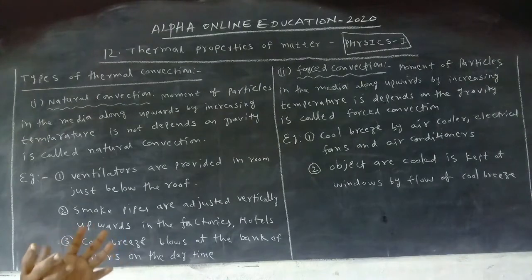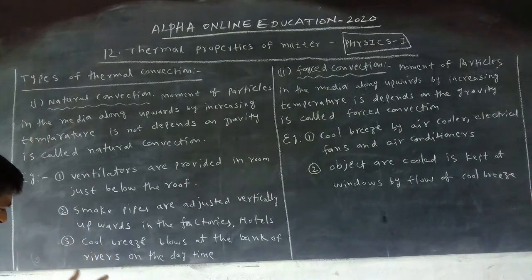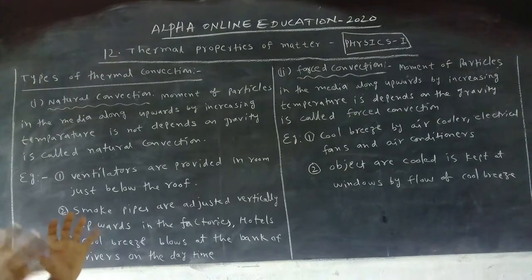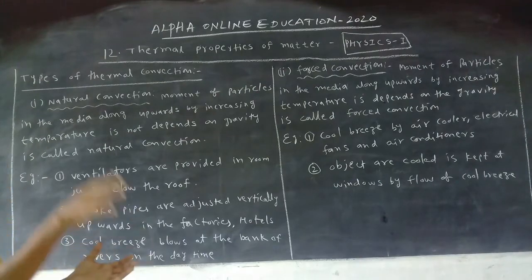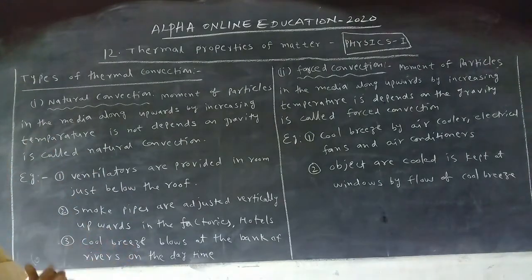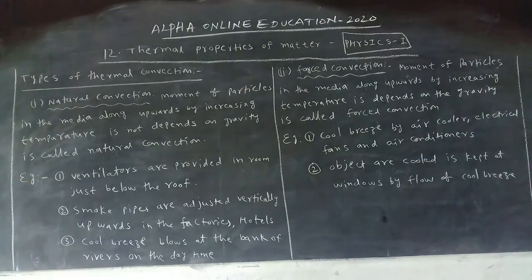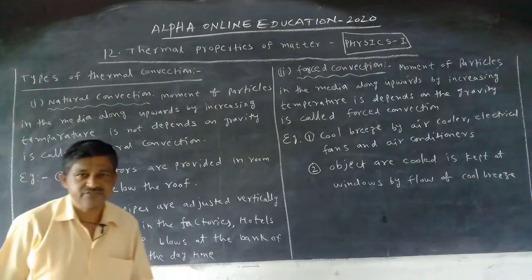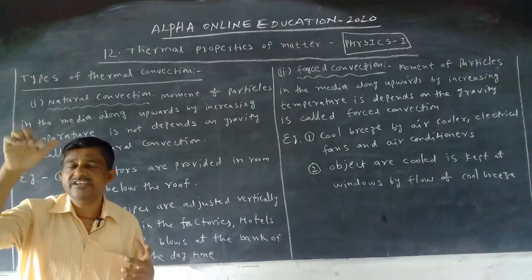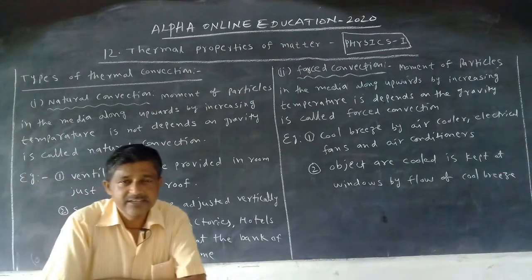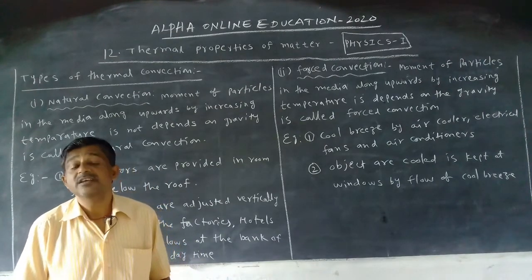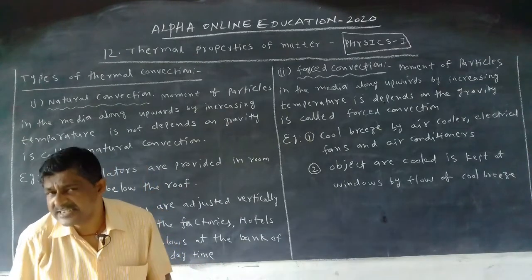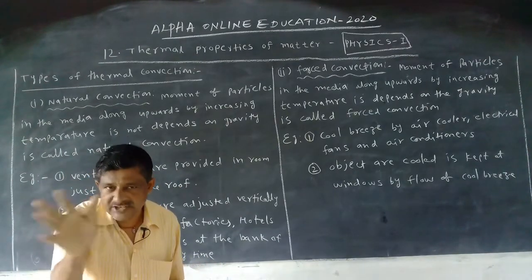In forced convection, when the temperature increases, volume increases and density decreases — but here the motion depends on gravity. Examples of forced convection include cold breeze from air coolers, electrical fans, and air conditioners. If we switch on an electrical fan, or sit in front of air coolers and air conditioners, we get coolness by the process of forced convection.